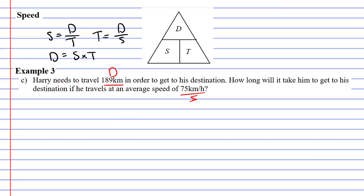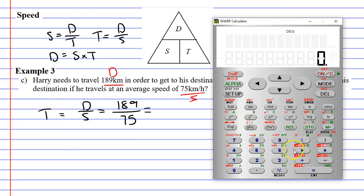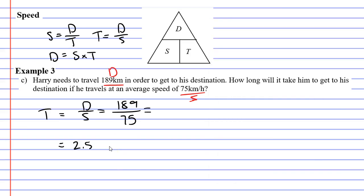Let's use the formula. So we are finding the time it's going to take, and time is found by going distance divide speed. Our distance being 189, and our speed being 75. So grabbing our calculator, and using divide, 189 divide 75 equals 2.52. So it's going to take him 2.52 hours to get to the destination.